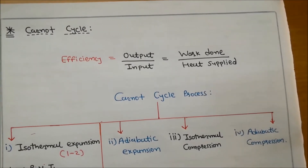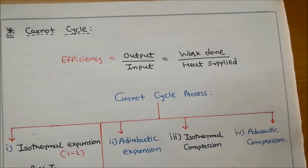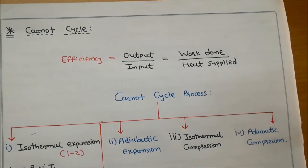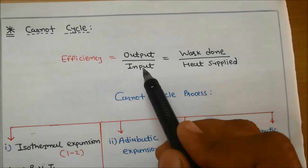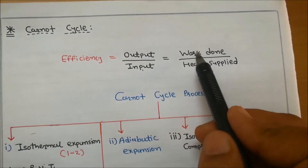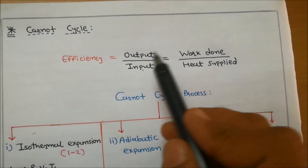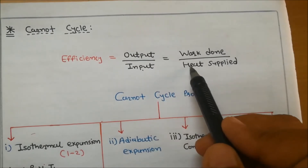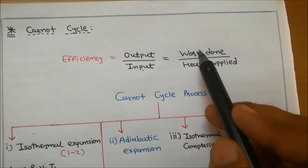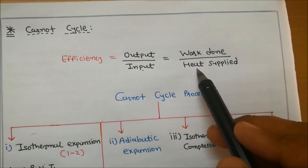Hello friends. Today we discuss how to derive the equation for Carnot cycle efficiency. The first question is: what is efficiency? The general formula for efficiency is output divided by input. In the Carnot cycle, work done is the output and heat supplied is the input. So efficiency equals work done divided by heat supplied.